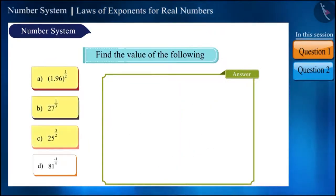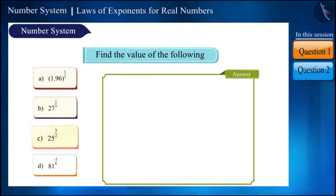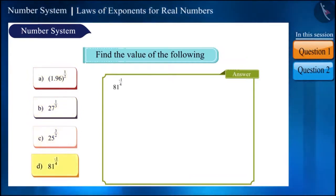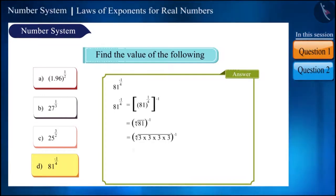So far, the numbers were positive numbers. But here, the exponent of 81 is minus 1/4. We can write it like this: 81 raised to the power 1/4, that is the fourth root of 81. And now we get 3 to the power of minus 1.